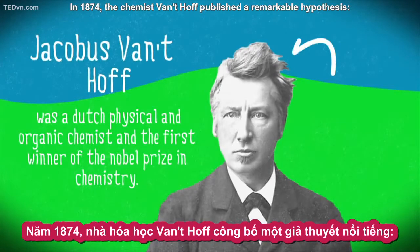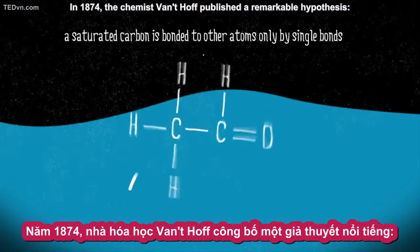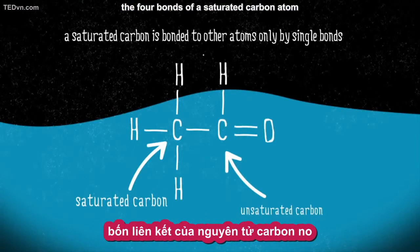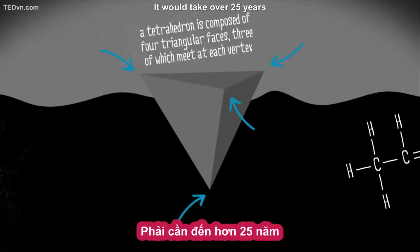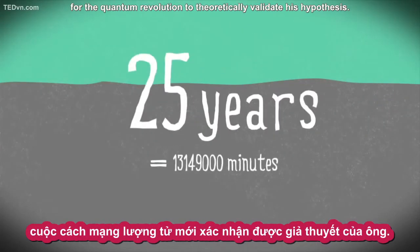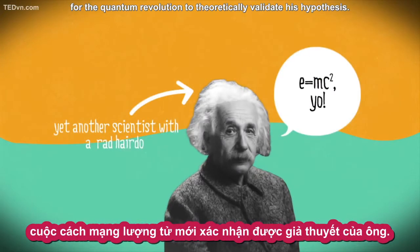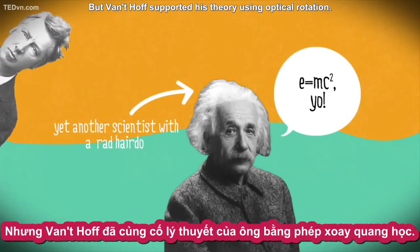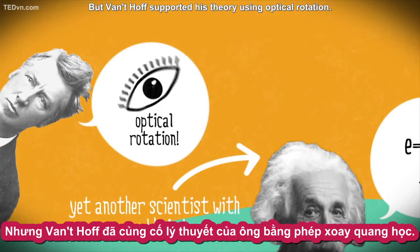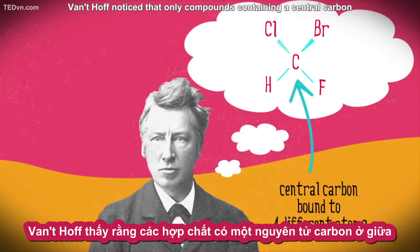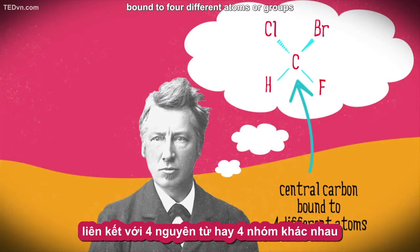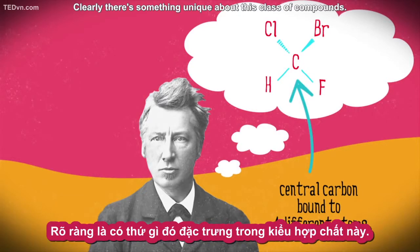In 1874, the chemist Van't Hoff published a remarkable hypothesis: the four bonds of a saturated carbon atom point to the corners of a tetrahedron. It would take over 25 years for the quantum revolution to theoretically validate his hypothesis, but Van't Hoff supported his theory using optical rotation. He noticed that only compounds containing a central carbon bound to four different atoms or groups rotated plane polarized light. Clearly, there's something unique about this class of compounds.